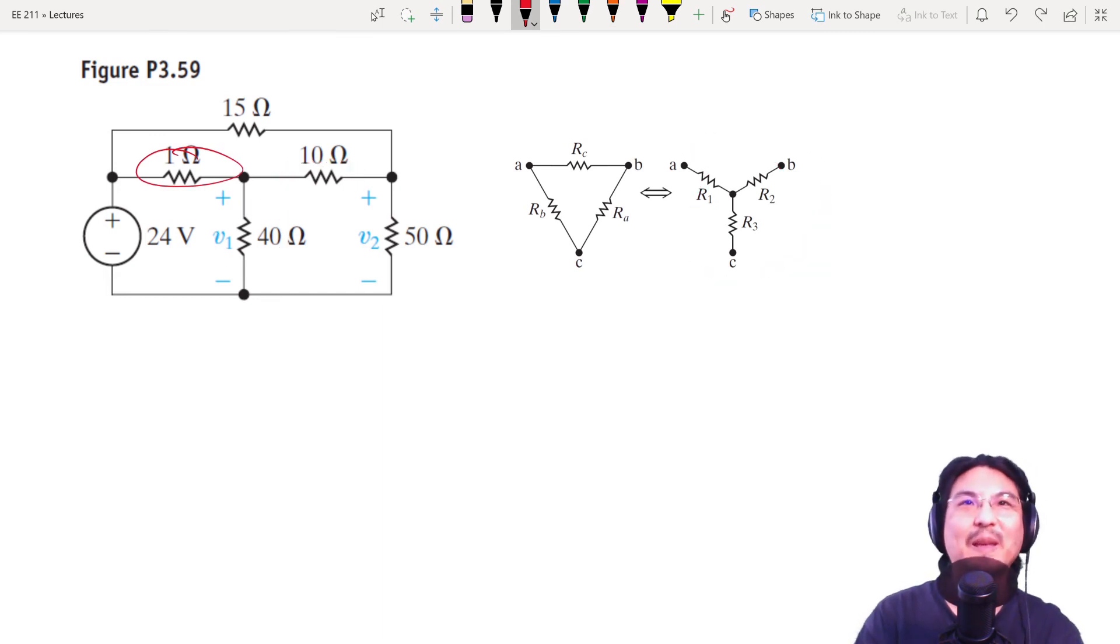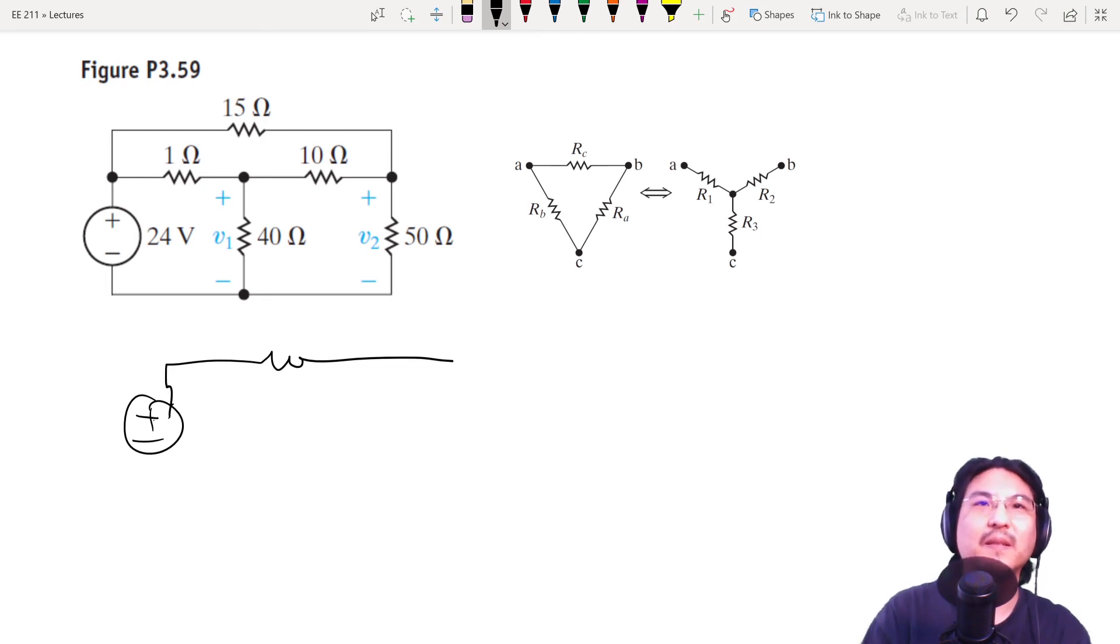...so maybe let's replace that with a delta. So it looks more like, that's the 15, and then, okay, so I'm going to replace—I'll call this A, B, C...